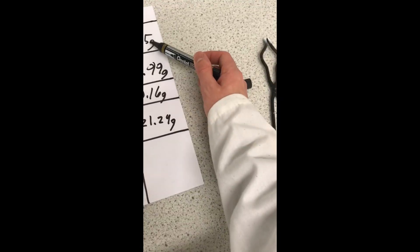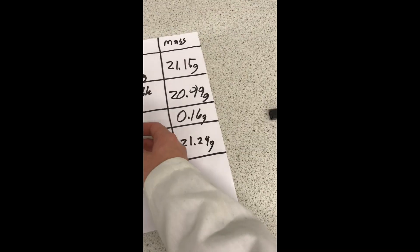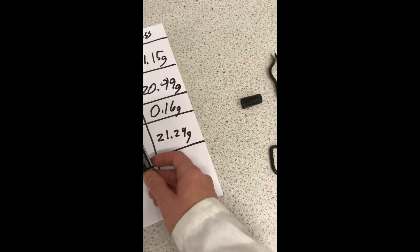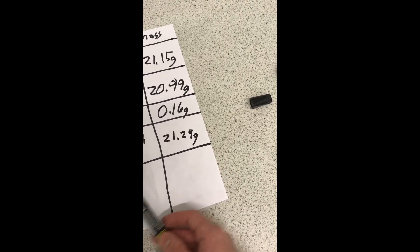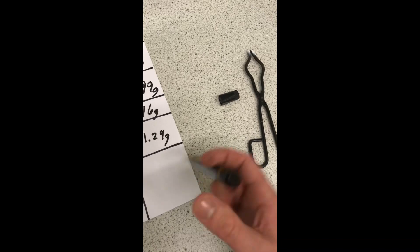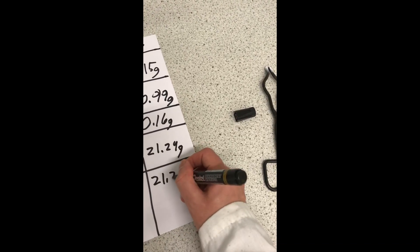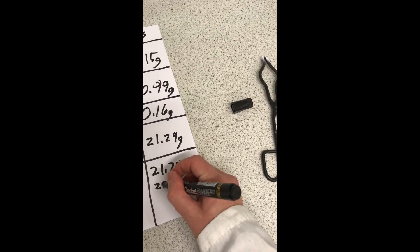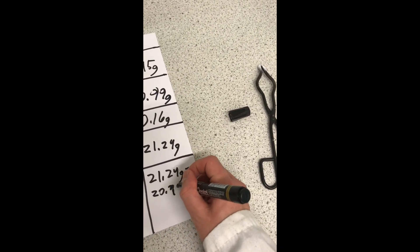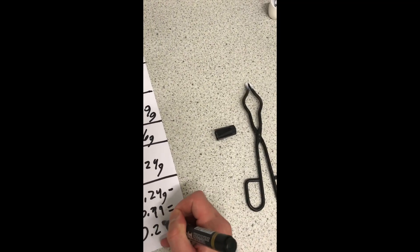Now, the original mass is only 21.15 grams, so if we take the mass of the empty crucible with the lid, and take the crucible with the lid and magnesium oxide, so that will be 21.24 grams, take away 20.99, this will give us exactly 0.25 grams.